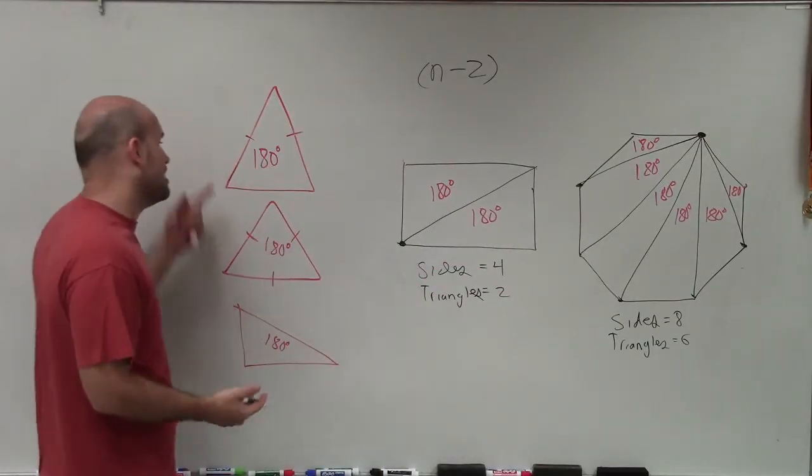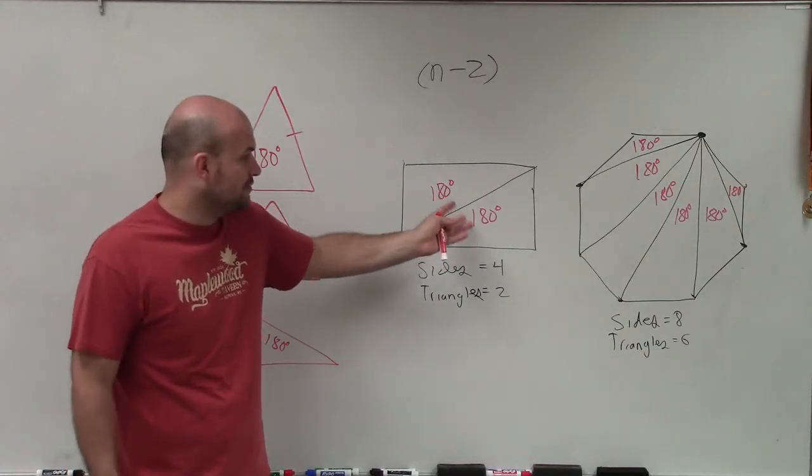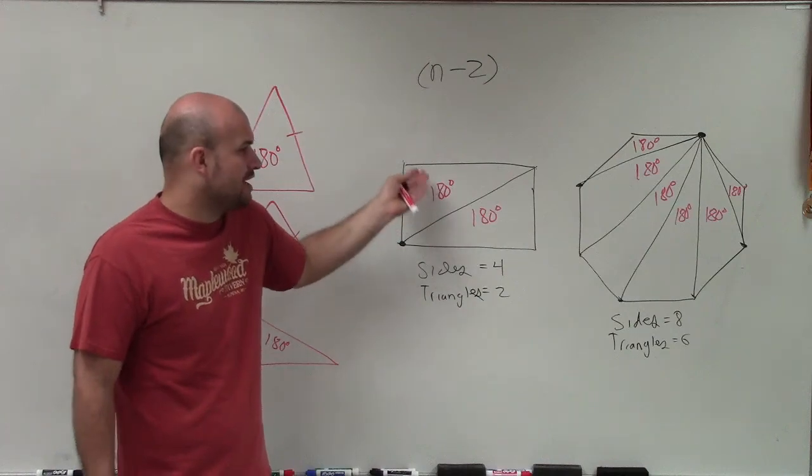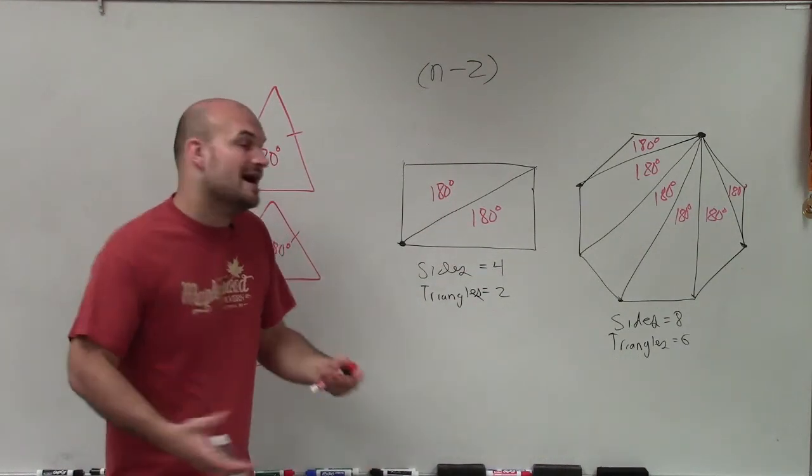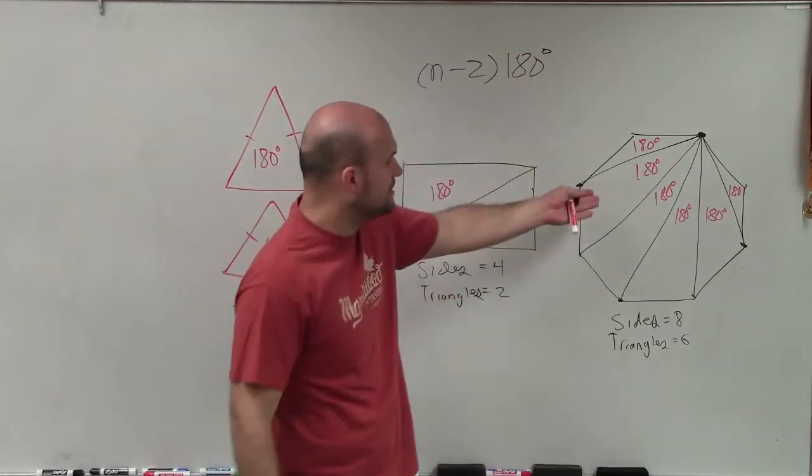Now, to actually find the sum, we know the sum of a triangle is 180. But for the quadrilateral, you have two triangles. So you're simply just adding 180 plus 180, or multiplying the number of triangles times 180 degrees. And that's exactly what we do in this case.